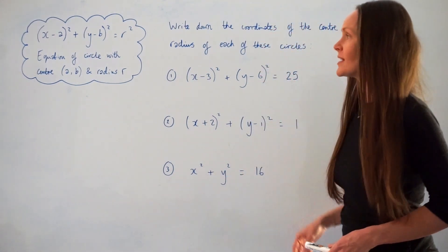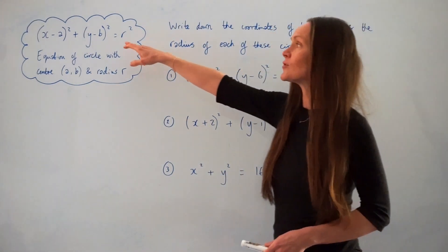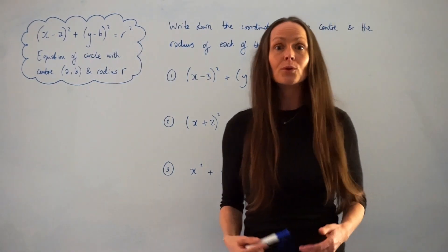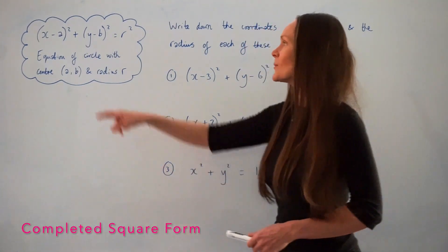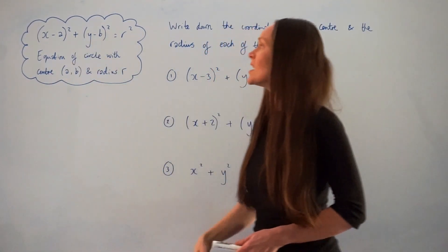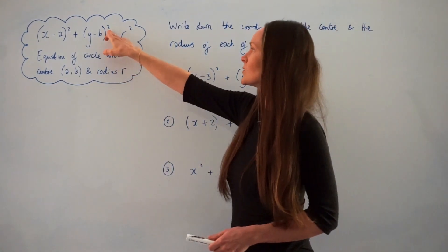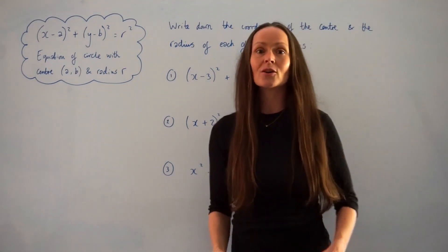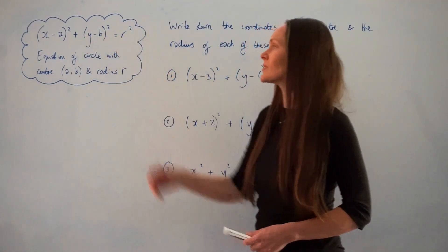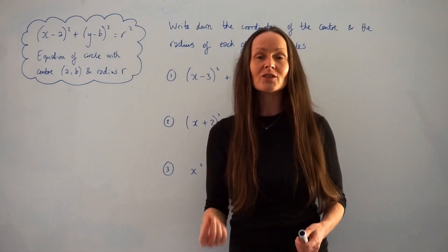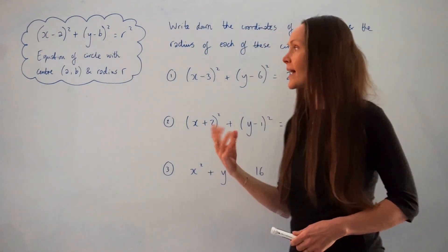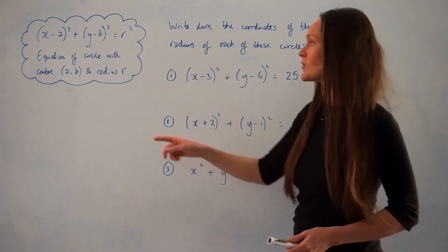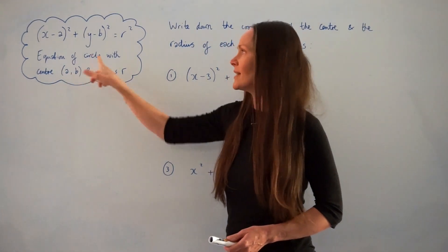Before we look at these questions, I want to draw your attention to this equation at the top. This is the equation of a circle given in what we call completed square form. It says x minus a in brackets all squared plus y minus b in brackets all squared, and it's equal to r squared. The centre coordinates of the circle lie at a, b.